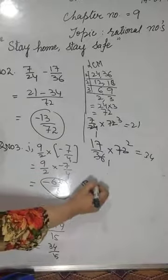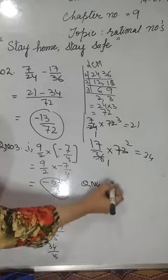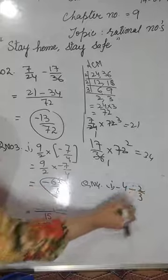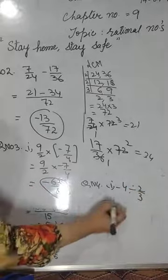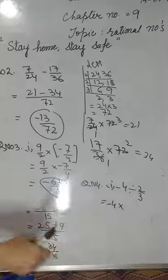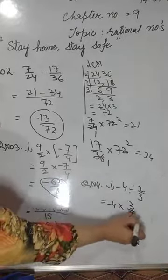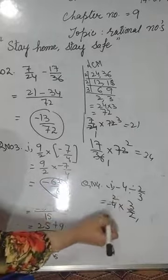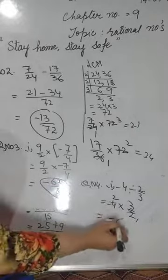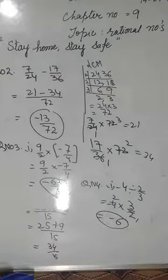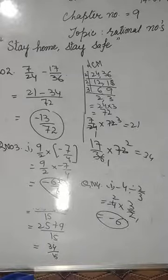Isi tarah se iske baaki parts karne hain. Question number 4, pehla part: minus 4 divided by 2 by 3. Minus 4 — divide ko into mein change kijiye, usse kya hoga, iska reciprocal ho jayega, yeh banega 3 by 2. Yahan par cancellation kijiye: 2 into 2 se 4, answer nikla minus 6. Hope you understood that. Toh milte hain next chapter par — Allah Hafiz.